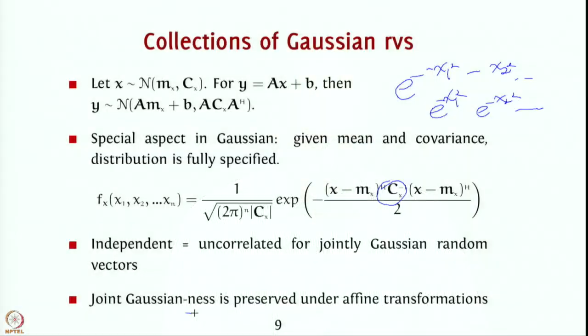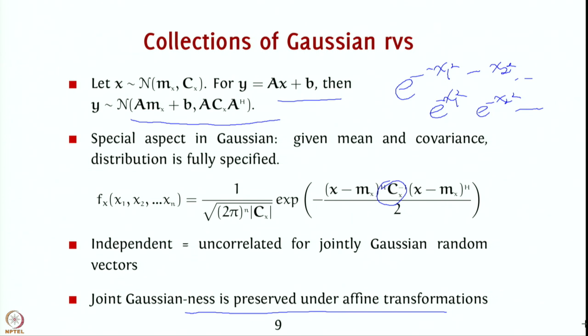Joint Gaussianity is also preserved under affine transformations. If you take a jointly Gaussian random vector and apply an affine transformation to it, the resulting random variable is also jointly Gaussian. These properties will come in handy whenever we deal with vectors such as jointly detecting multiple symbols, so keep these things in mind and we will refer back to them as the situation arises.